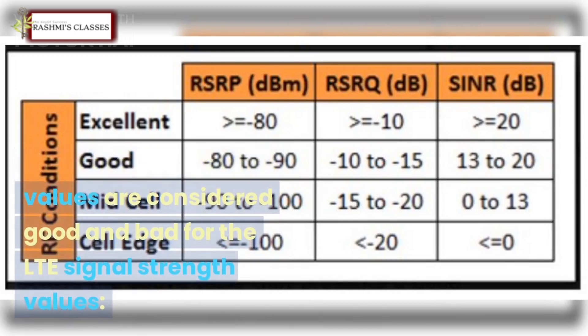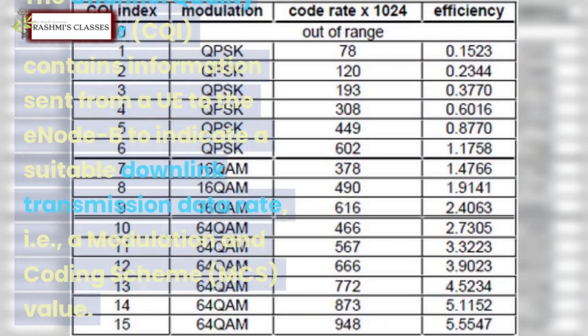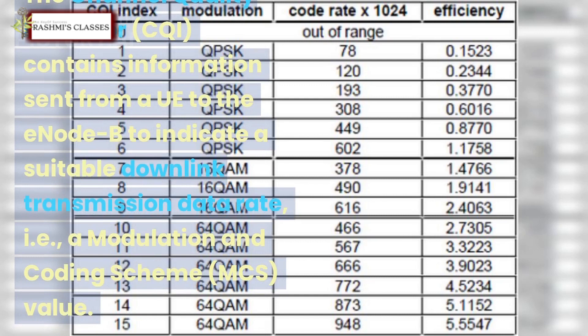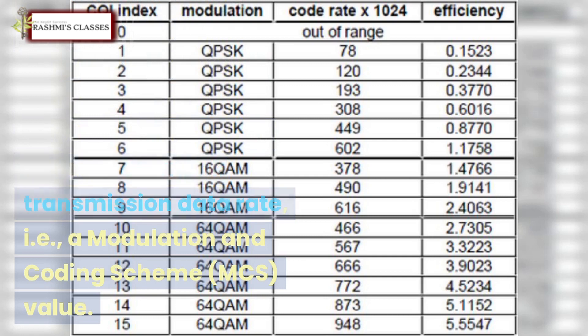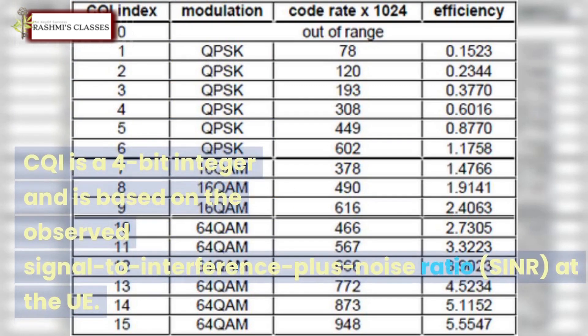5. CQI: The Channel Quality Indicator (CQI) contains information sent from a UE to the eNodeB to indicate a suitable downlink transmission data rate, i.e., a Modulation and Coding Scheme (MCS) value. CQI is a 4-bit integer and is based on the observed Signal to Interference plus Noise Ratio (SINR) at the UE.